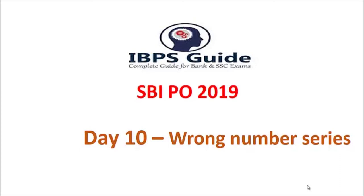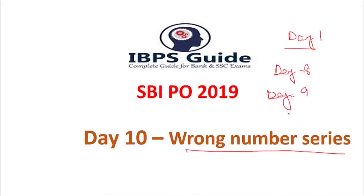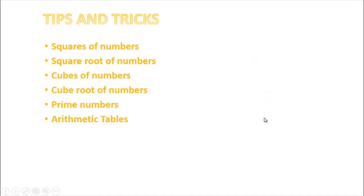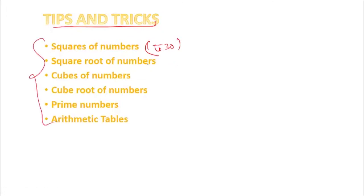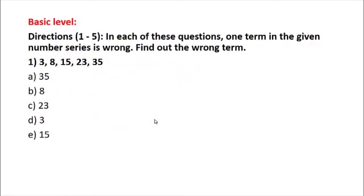Hello friends, welcome to IBPS Guide. Today is Day 10 - wrong number series. Hope you have been watching videos since Day 1. Before moving on, remember some tips and tricks: you must know squares of numbers from 1 to 30, square roots, cubes from 1 to 15, cube roots, prime numbers, and arithmetic tables. These have all been discussed in previous videos. Now let us begin with the questions. Please try to solve each problem on your own before looking at the solution.